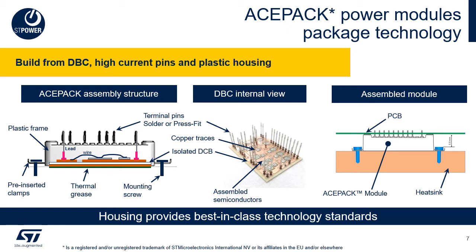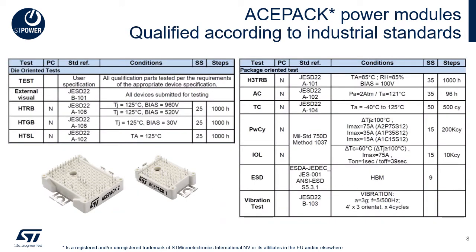There is no potting material placed within the module, but the semiconductors are coated with a non-conductive gel to insulate them from the operating environment. On the right side of this slide we see the two pre-inserted screw clamps, which are attached to the plastic housing and simplify the mounting process to the heat sink. The ASPEC power modules are designed for industrial use, with qualification according to industry standards, ensuring high quality and reliability.